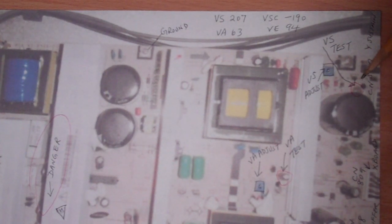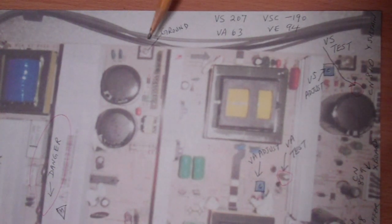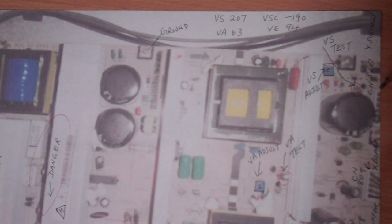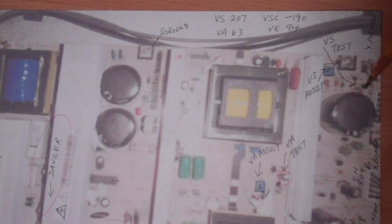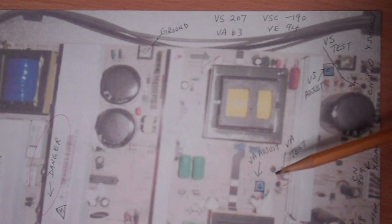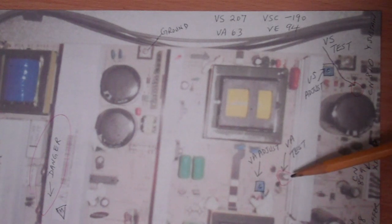Put your red probe here and put your ground on a grounding screw and see what the voltage is. If it is 207 or close to it, that's fine. Then you can also check your VA voltage - there's another pole here.